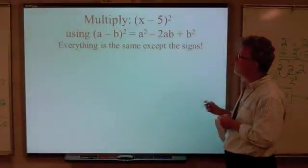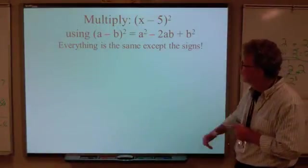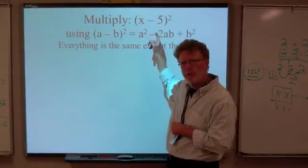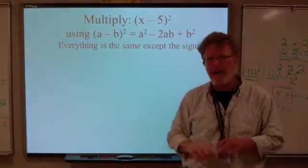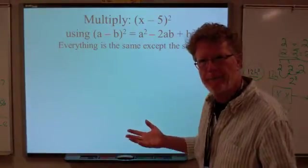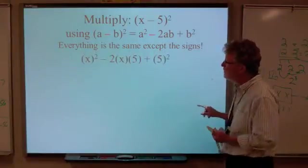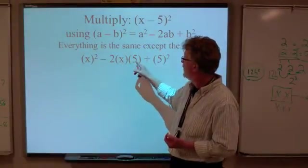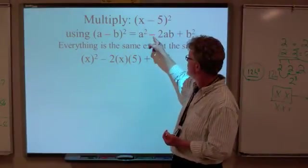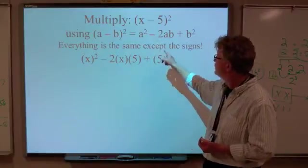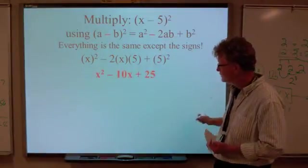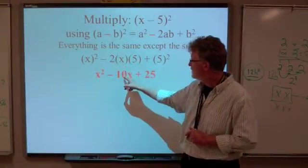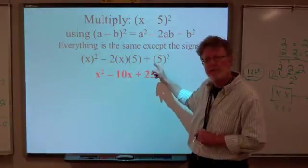Now let's try the difference, the square of the difference: (a - b)² equals a² - 2ab + b² every time. So let's see what we've got. We have (x - 5)². Using (a - b)² = a² - 2ab + b², everything is the same except the sign. (x)² - 2(x)(5) + (5)² because we have an x and a 5. Remember we have to use the negative sign. When we simplify: x² - 2 times 5 is 10, and the x + 25 which is 5 squared.